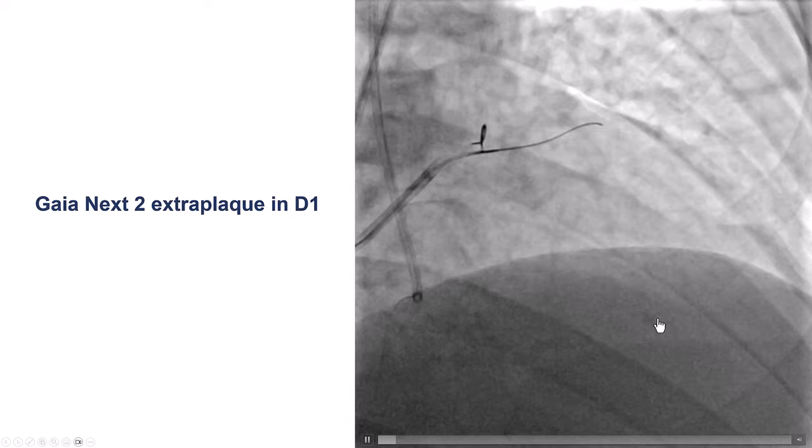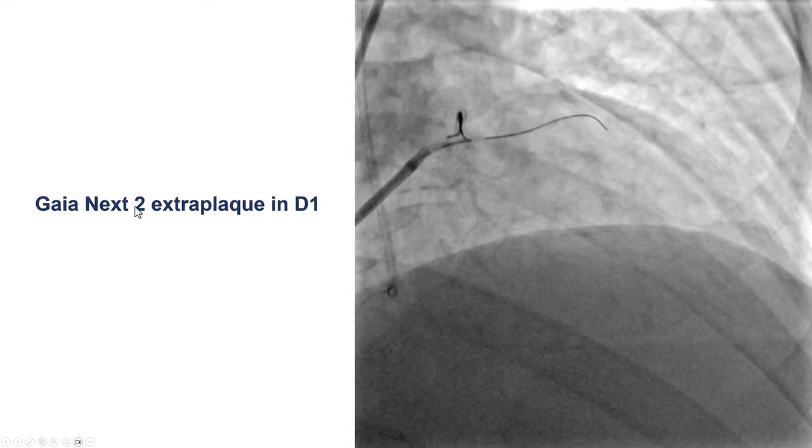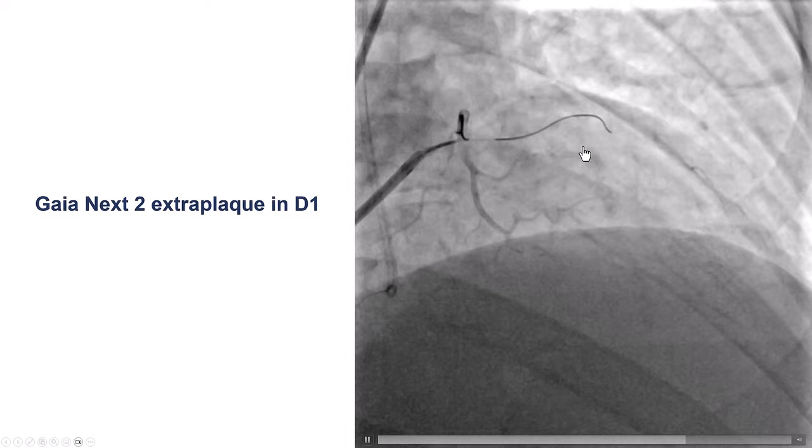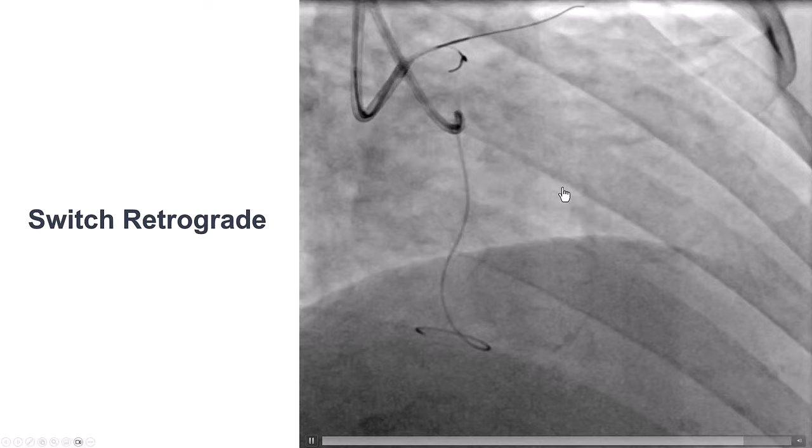After multiple attempts, we had one of the Gaia Next wires — the Gaia Next 2 — going into the diagonal, but that was extraplaque. After multiple attempts, we decided to move to step number two, which was to go retrograde.